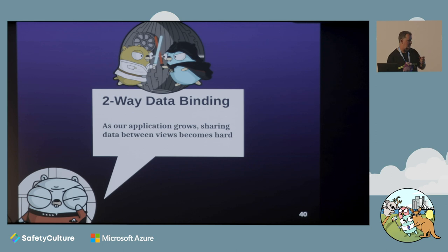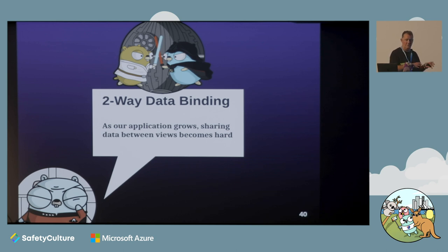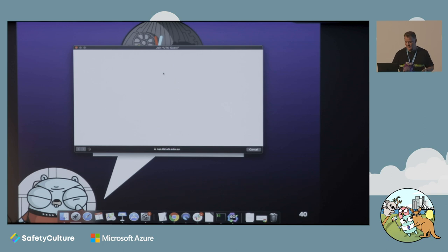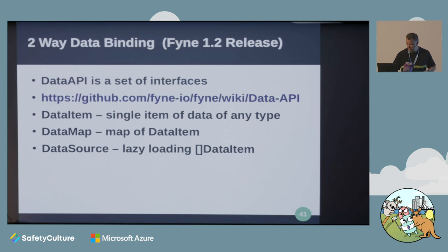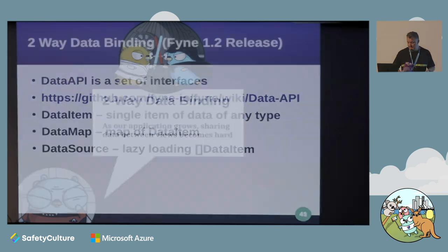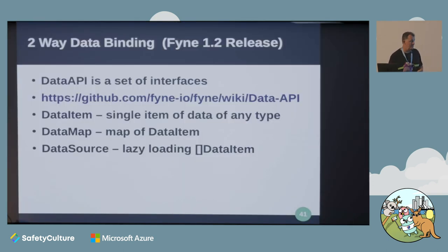The last part is two-way data binding in Fyne. There's a data API being developed that we're hoping to release by Christmas. It's basically a set of interfaces defined inside Fyne - if your data can implement these interfaces, you get automatic two-way data binding. I'm using it in a game I'm writing where RPCs come in with protobuf information, and I just want the data to come in and automatically update all the maps and everything happening in the game.